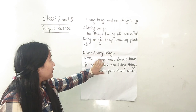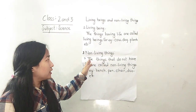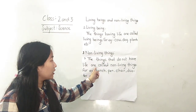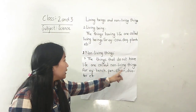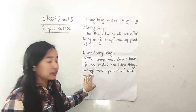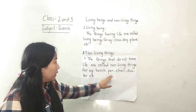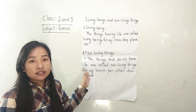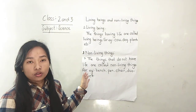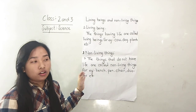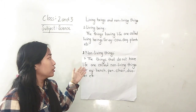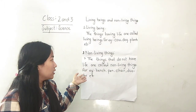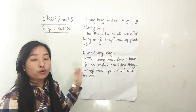The things that do not have life are called non-living things — for example, bench, chair, duster. Non-living things do not grow old, non-living things do not reproduce, non-living things do not breathe.